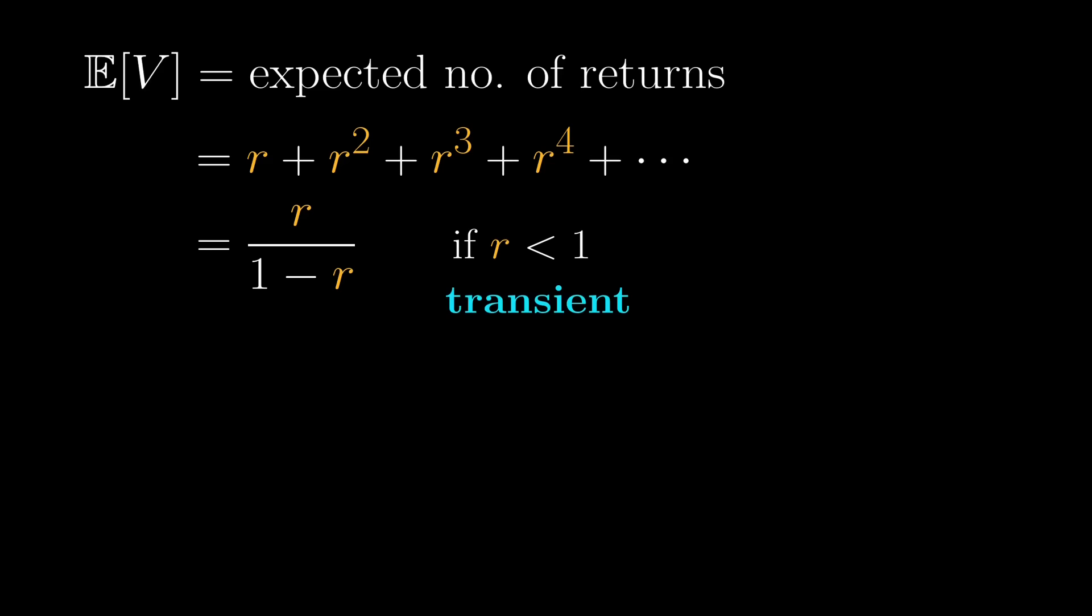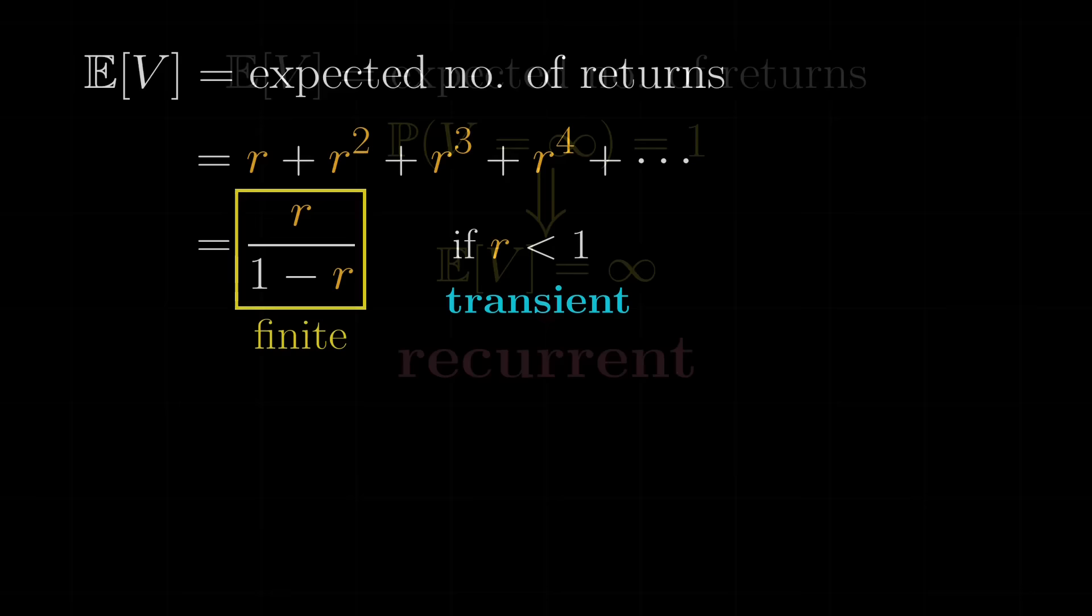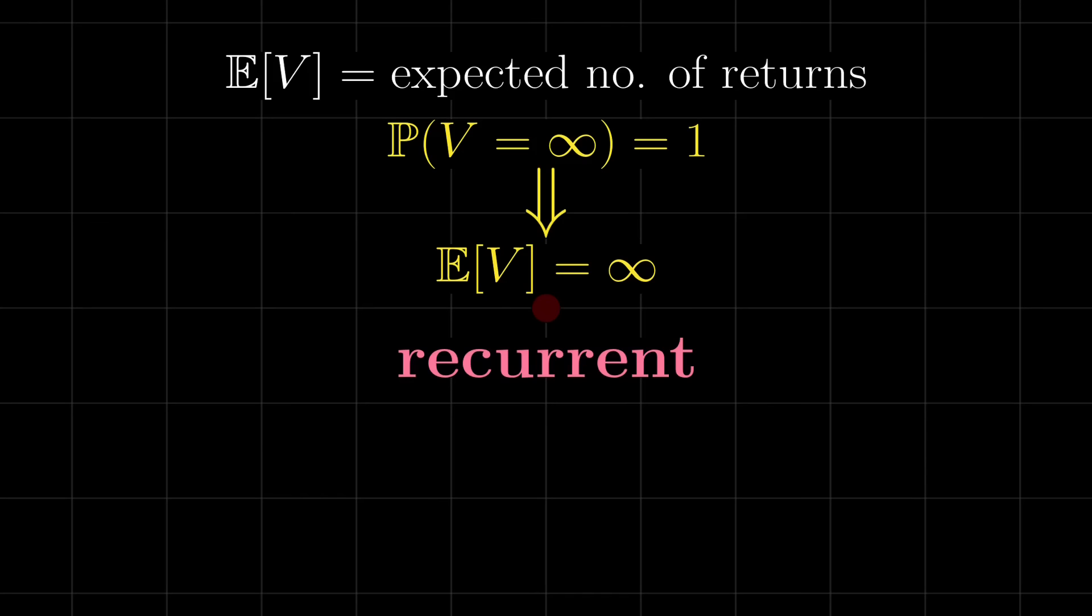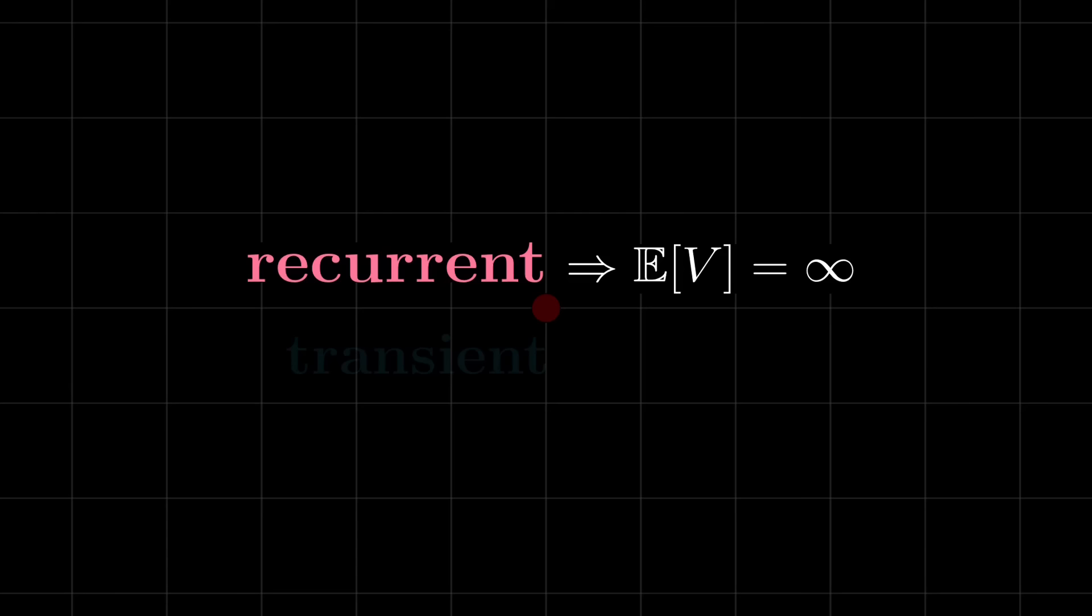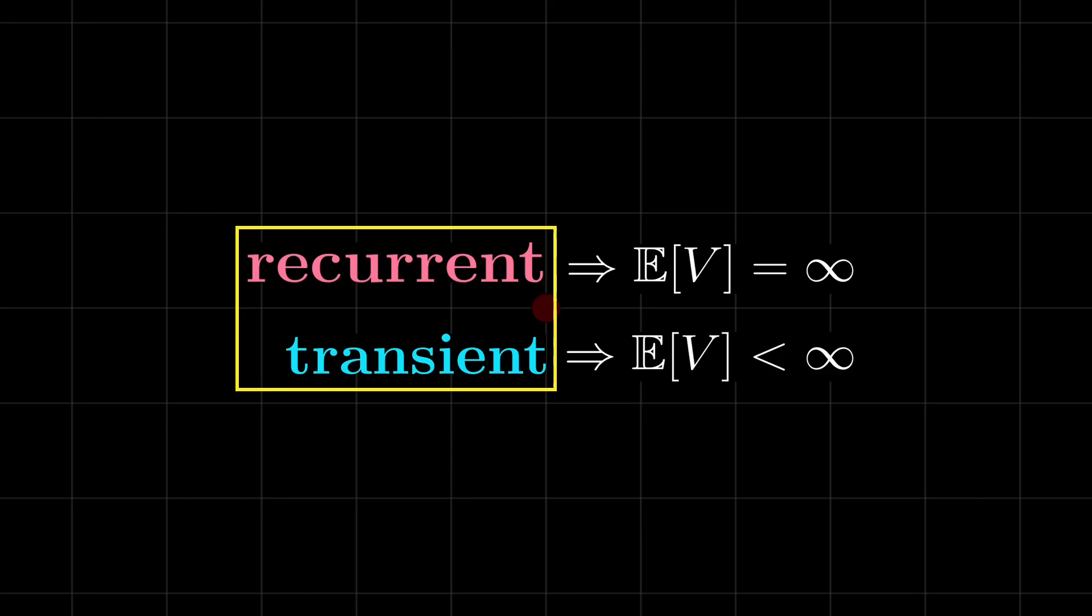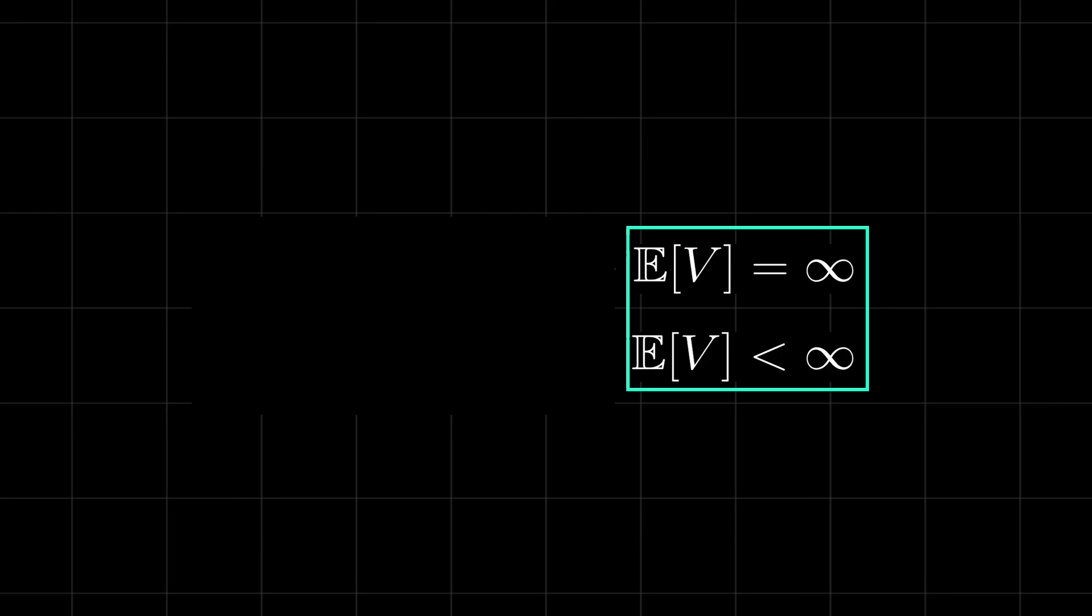However, we have also deduced that for a recurrent state, this expected number of returns is infinite. So if the state is recurrent, we have the expectation to be infinite, and if the state is transient, the expectation is finite. Because the state is either recurrent or transient, if, say, the expectation is infinite, the state could not possibly have been transient, and so we can infer that the state is recurrent. So if we know whether this expectation is infinite, we are done.